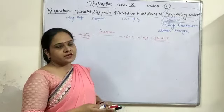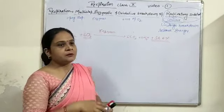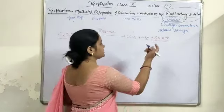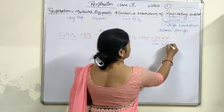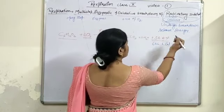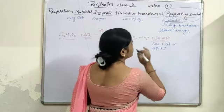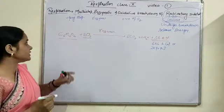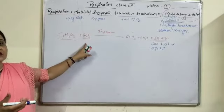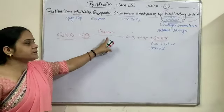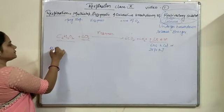This amount of energy, when measured in kilocalories or kilojoules, is 686 kilocalories or 2870 kilojoules — energy released when one glucose molecule undergoes respiration in the presence of enzymes. Now, how is this ATP produced?